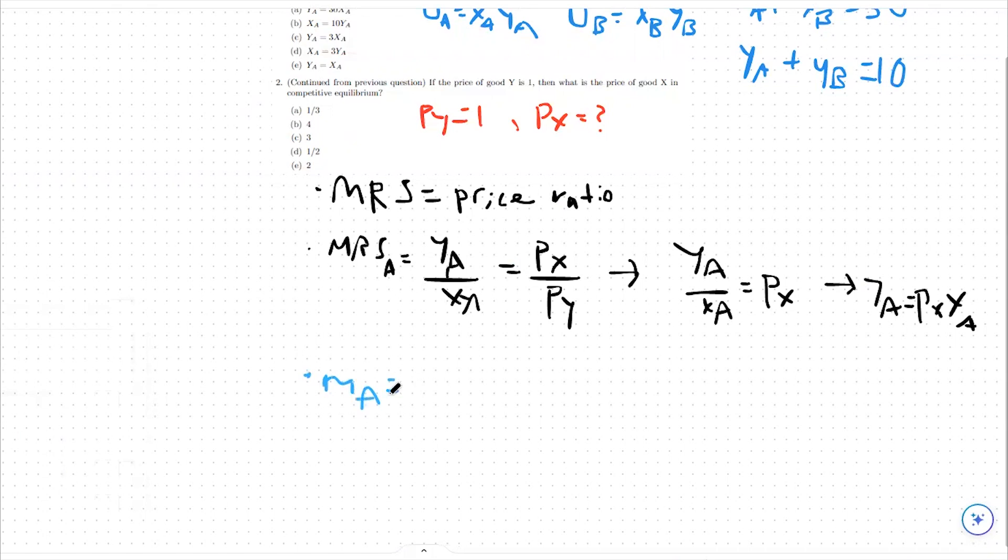Or the price that good x costs times the amount of x we purchase, and then plus py times yA.